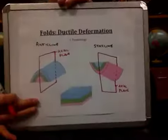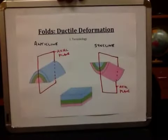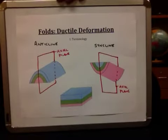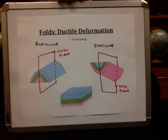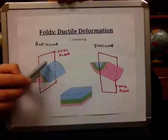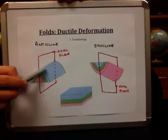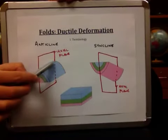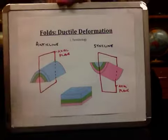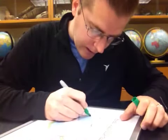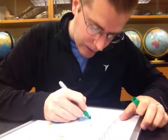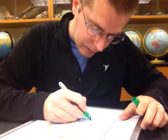We've drawn the axial plane to cut our folds in half. Where this imaginary plane — because it's not real — touches the fold, we have what's known as the hinge line that actually runs along the fold.